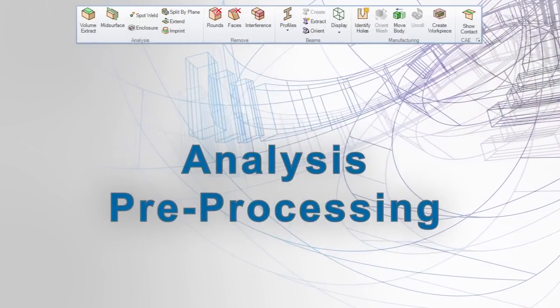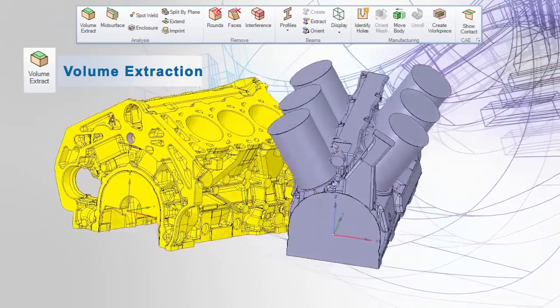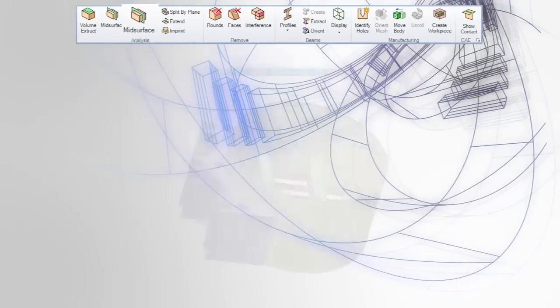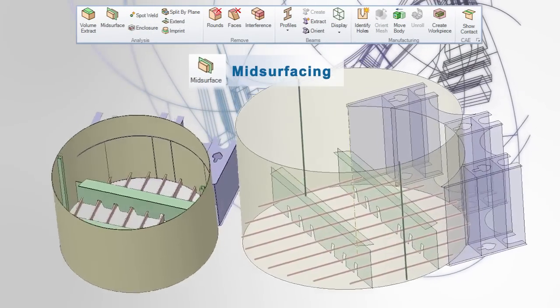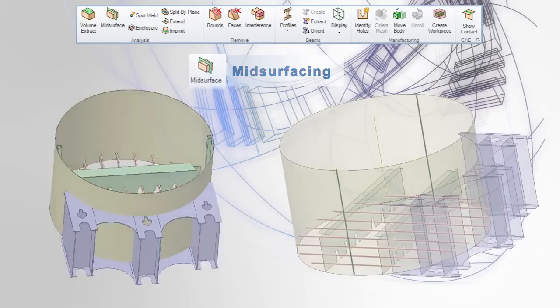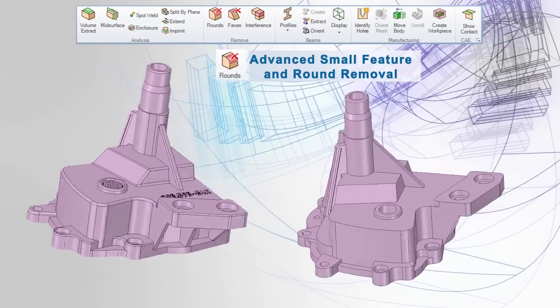SpaceClaim's Prepare tab is dedicated to helping an analyst perform workflows like volume extraction, mid-surfacing, round removal, and general de-featuring of models. It has all the tools needed to find optimal results faster. They often see a 10x improvement in model simplification workflows by using SpaceClaim.